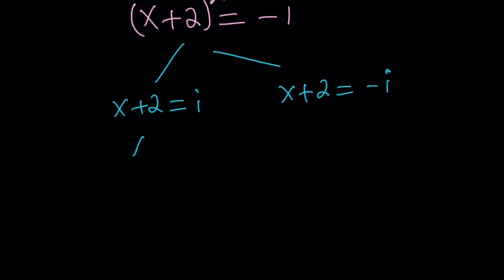x plus 2 is either i or the opposite of i, which is negative i. From here, we get x equals negative 2 plus i or x equals negative 2 minus i. Now, these are the solutions to the quadratic.